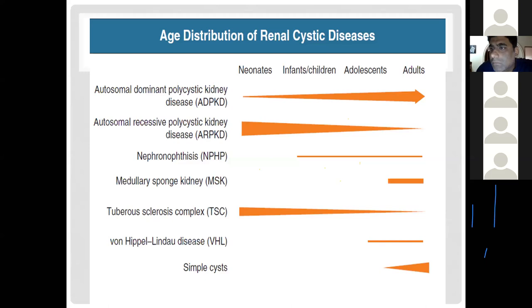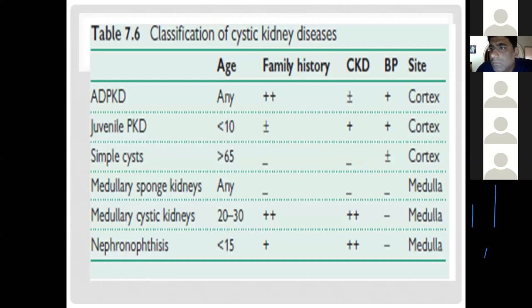This slide also shows the predilected age for each disorder and its correlation with family history. Genetic disorders such as ADPKD and juvenile nephronophthisis show a strong correlation with family history. The slide also shows the site of origin within the kidney: kidneys are broadly divided into cortex and medulla, with the first three disorders originating from the cortex and the last three from the medulla.